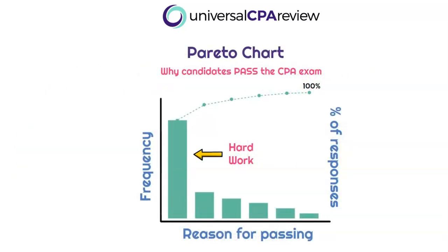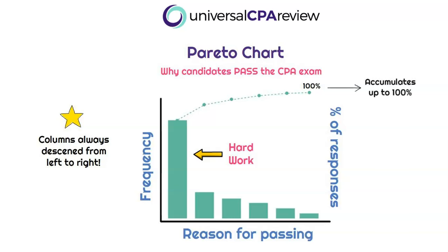The next chart is a Pareto chart. In this example it illustrates why candidates passed the CPA exam. The bars represent the count, volume, or frequency, and we always start with the highest amount on the left and descend. What's unique about a Pareto chart is it also has a line that shows cumulative percentage up to 100%, meaning we've included 100% of the responses. Just remember: it has both bars and a cumulative line.